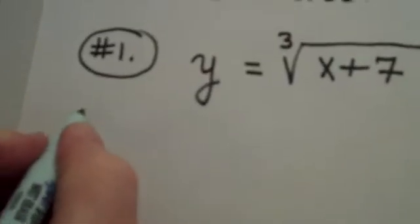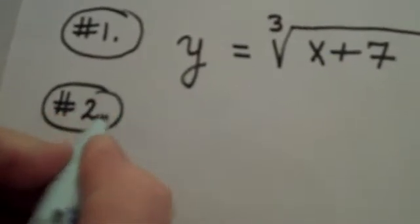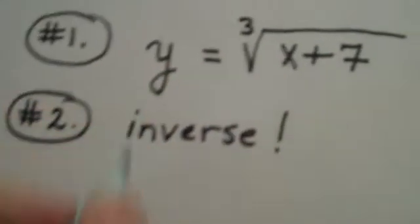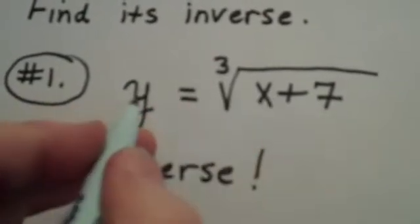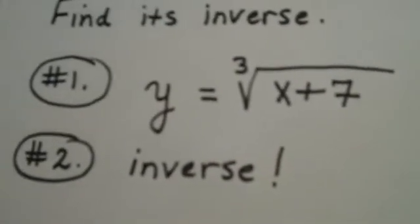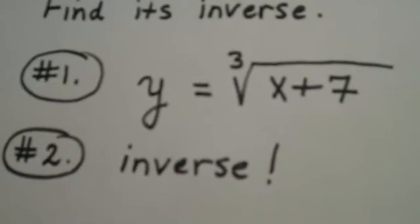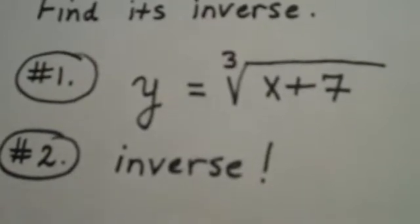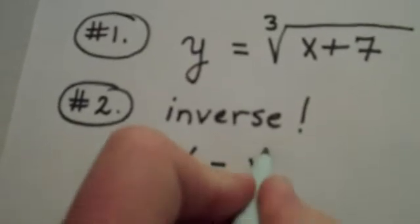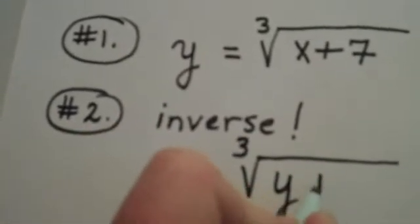Now, step number two is to write the inverse formula. And the way I create that is by switching the roles of the x and y. Because remember, for an inverse function, or inverse relation, but in this case it's also a function, your domain and your range interchange. So my inverse rule would be x equals the cube root of y plus 7.